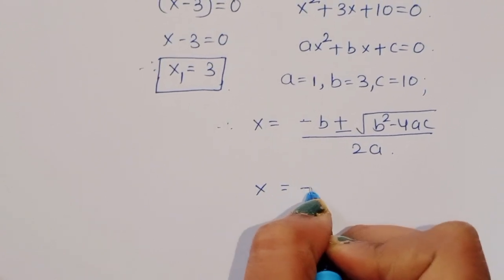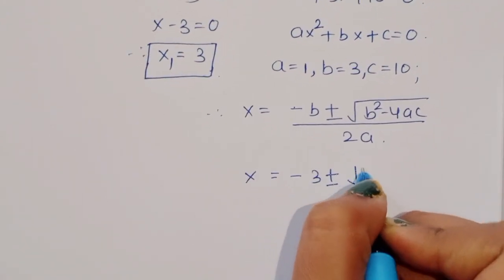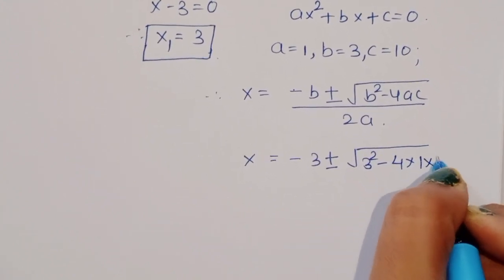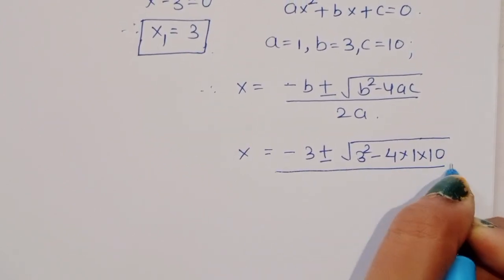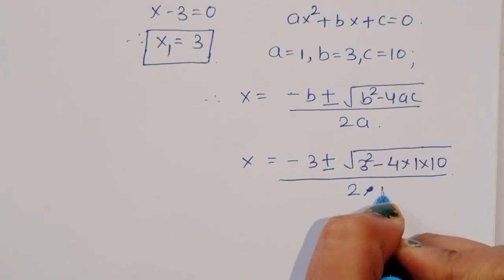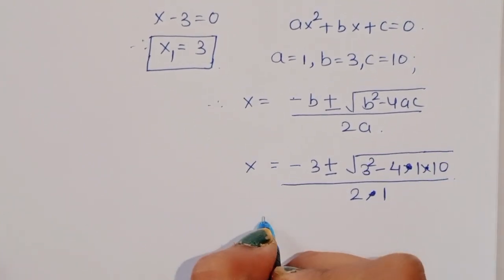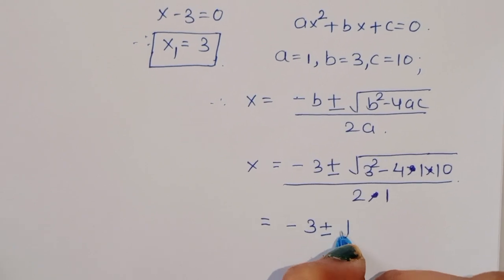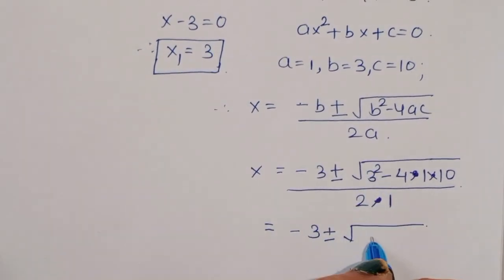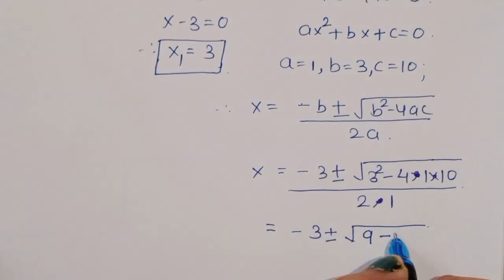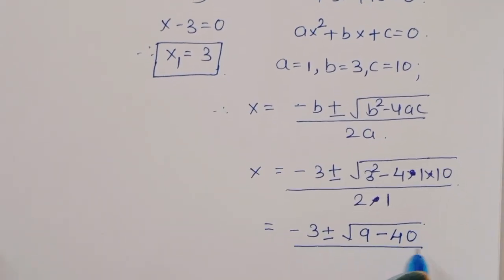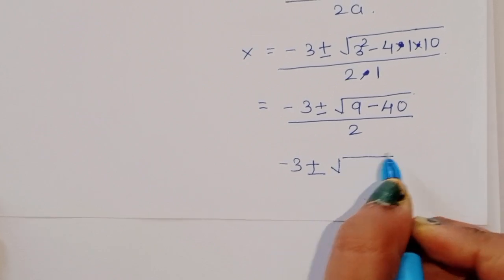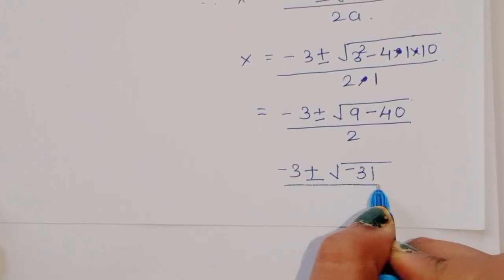Substituting: x = (−3 ± √(3² − 4 × 1 × 10)) / (2 × 1) = (−3 ± √(9 − 40)) / 2 = (−3 ± √(−31)) / 2.